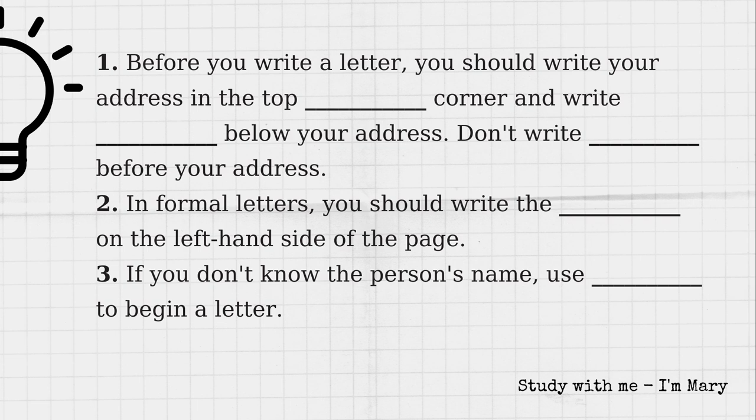He went back to England yesterday and left his address for me, but I'm not sure how to write it. Okay. You know, English letter writing is different from Chinese writing. You should write your address in the top right-hand corner and write the date immediately below your address. Today is the 28th of March, 2002, so you should write the date below your address.